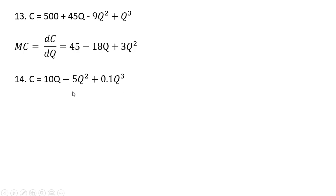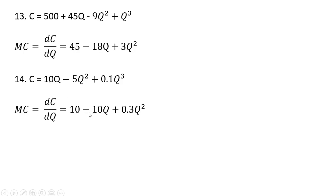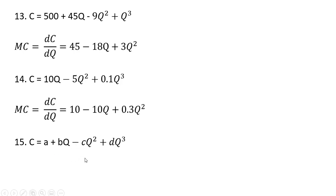Another total cost equation in cubic form. The derivative of 10q is 10. This middle term gives us minus 10q. And finally, this last term gives us 0.3q squared. So in general, if you have a cubic cost equation that looks like this, where we have a minus sign in front of the q squared term, your marginal cost would be given as follows.